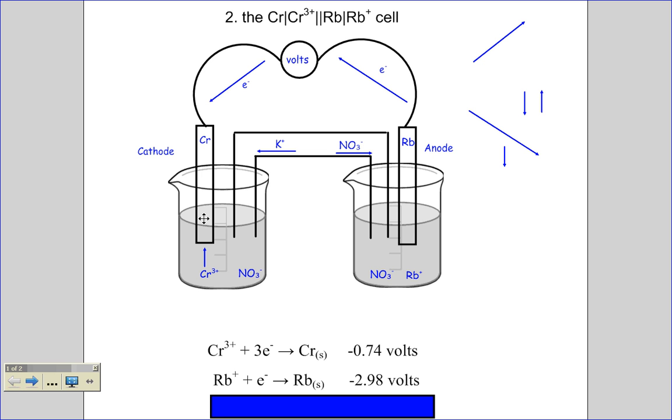The potassium in the salt bridge is flowing towards the cathode because it's trying to replace the positive charge that is disappearing. And this means that in the anode, the opposite is happening. This piece of rubidium metal is falling apart, electrons traveling through the wires to the other side and rubidium ions ending up in the solution.